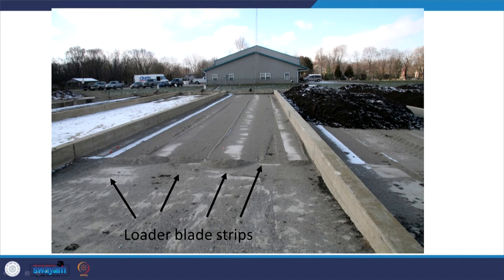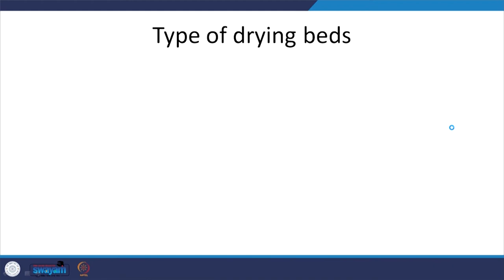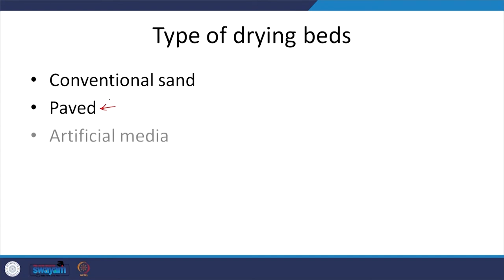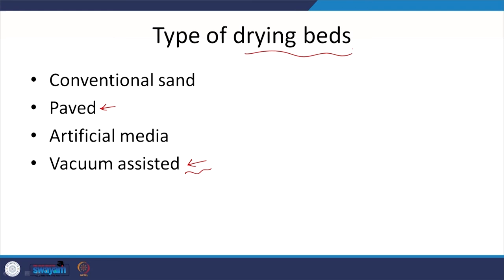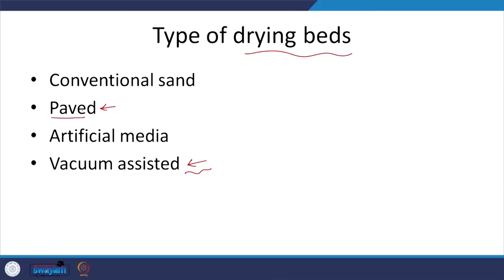Types of drying beds: conventional sand, paved — which is what is typically used — and artificial media or vacuum-assisted, which is rarely looked at. Typically in India we go for drying beds due to their simplicity, and vacuum-assisted options add complexity. Typically in India we look at paved or solar paved drying beds.